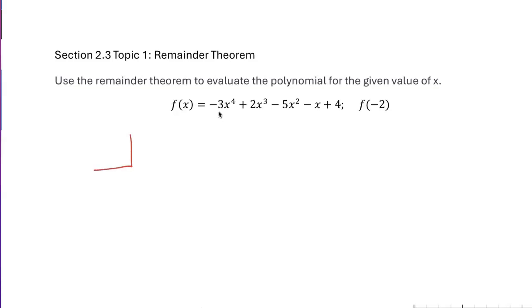Let's put negative 2 in the little box in the corner because we want to evaluate f of negative 2. We're going to write the coefficients of f(x) out here. f(x) equals negative 3x to the fourth plus 2x cubed minus 5x squared minus x plus 4.